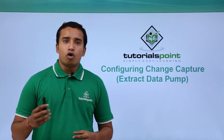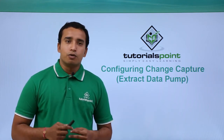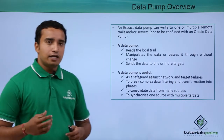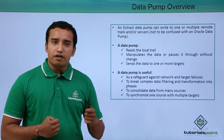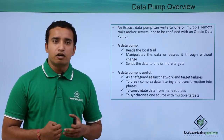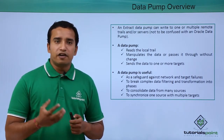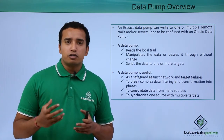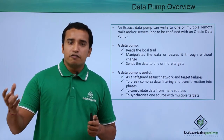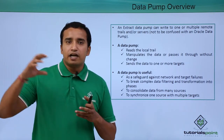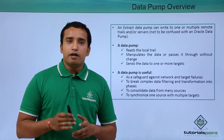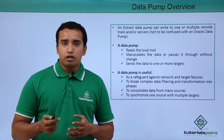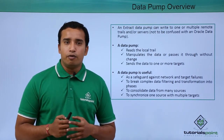In this video, we will be seeing the optional extract process known as the data pump process. There is a primary extract which extracts the data from the redo log files or the transactional log files, puts it into a trail file known as a local trail file, and then you configure an optional process known as the data pump process, which reads this trail file and sends the data to the replicate site. We are not going to confuse this data pump process with the Oracle-related technology known as export data pump or import data pump.